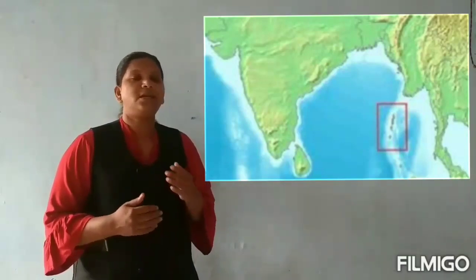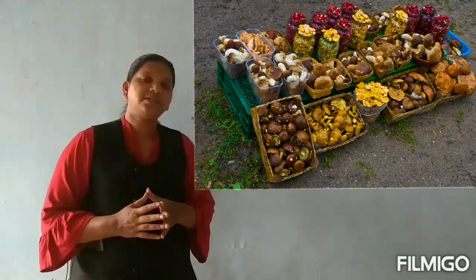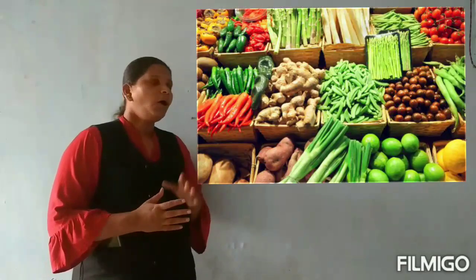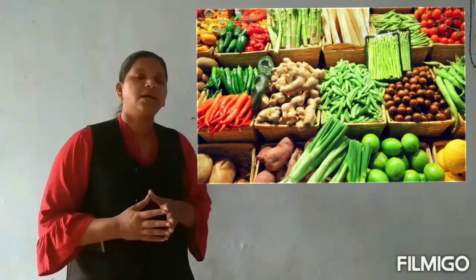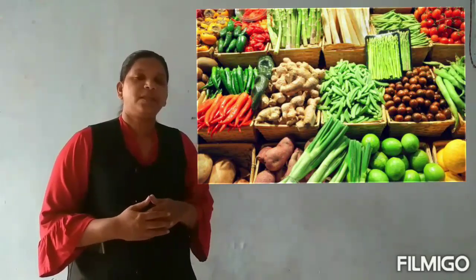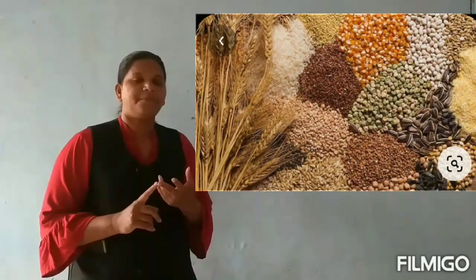People follow different practices and customs in different parts of the country. For example, people of the Andaman Islands get their food by fishing, collecting forest products, seeds, roots, leaves, etc. On the other side, most people living in cities depend on others for supplies of food like vegetables, fruits, grains, etc.